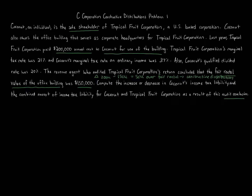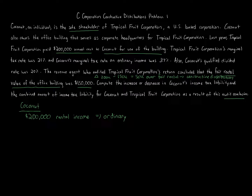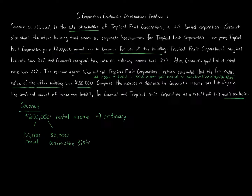That's really what's going on here. We're looking at two things: the effect to Coconut, who took in the rent and recorded $200,000 of rental income — which is subject to ordinary marginal tax rates — and the IRS is saying $150,000 is rental and $50,000 is a constructive distribution. If you hear someone say constructive dividend, it's the same topic, but they're making an assumption that you have enough earnings and profits for the distribution to be treated as a dividend.